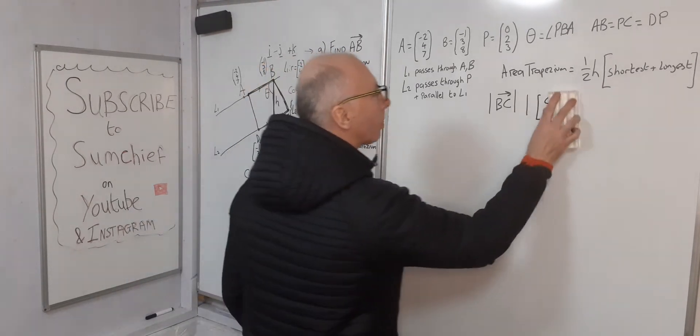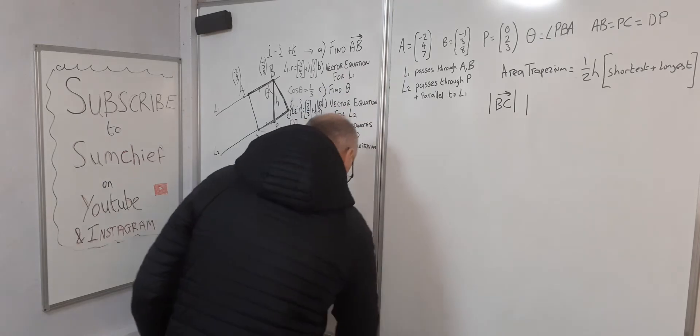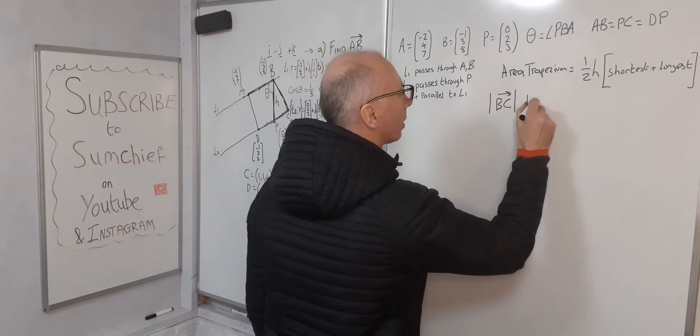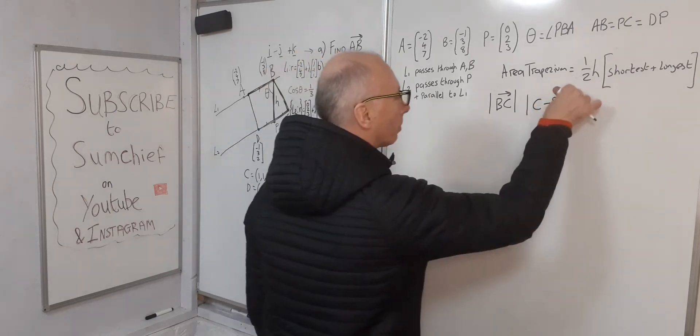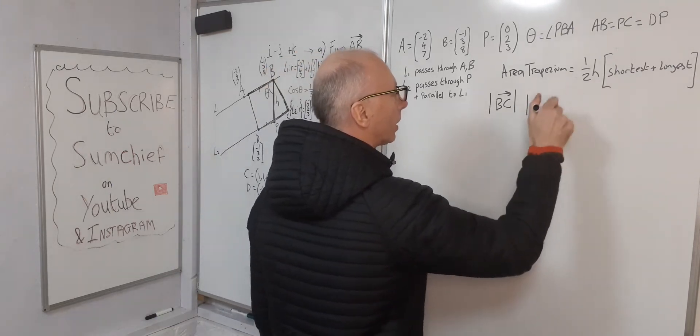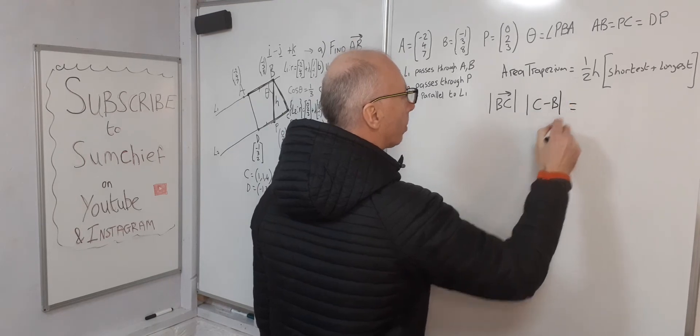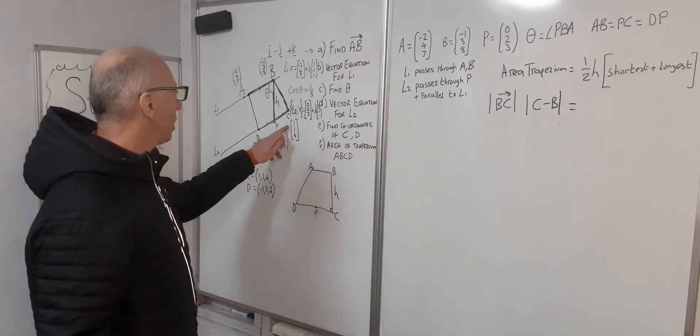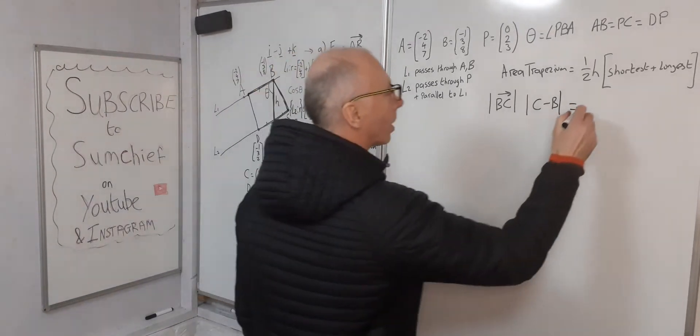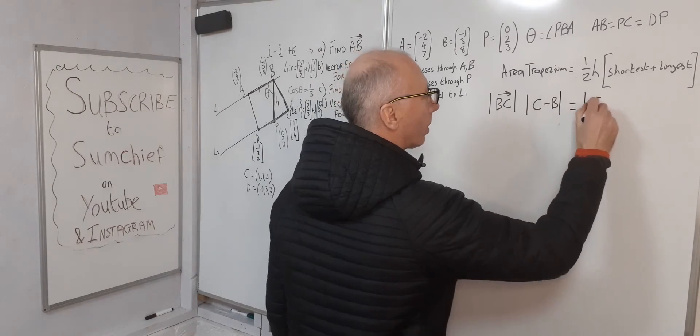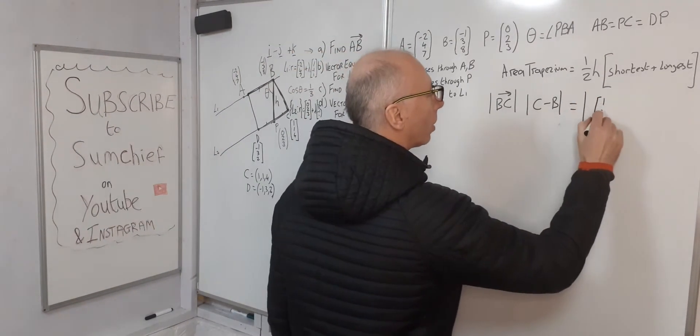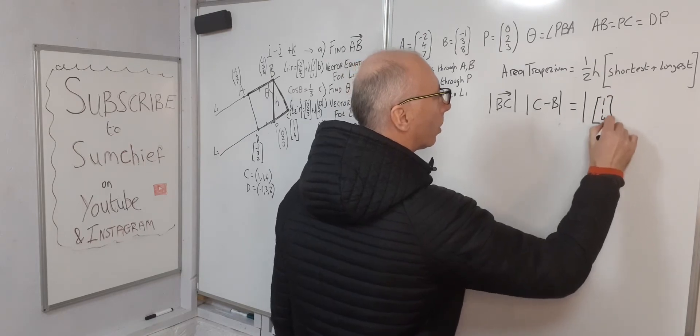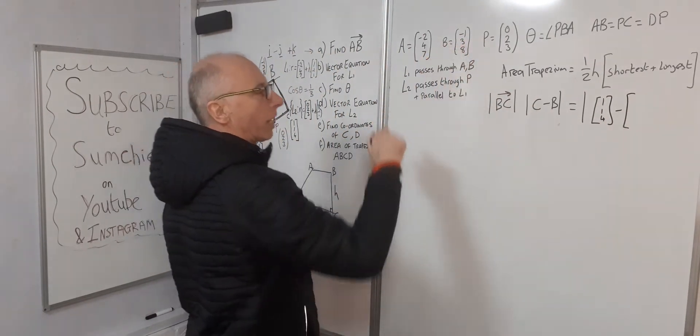Let's write that again a little bit better: absolute value of the vector C minus B. So that equals C minus B. C is (1, 1, 4), minus B which is (-1, 3, 8).